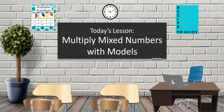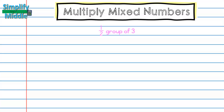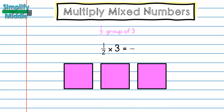Hi and welcome to today's lesson: multiplying mixed numbers with models. We're going to start by looking at multiplying a fraction times a whole number, and then we are going to extend that knowledge out to multiplying a fraction times a mixed number. Half of a group of three is the same thing as one-half times three.